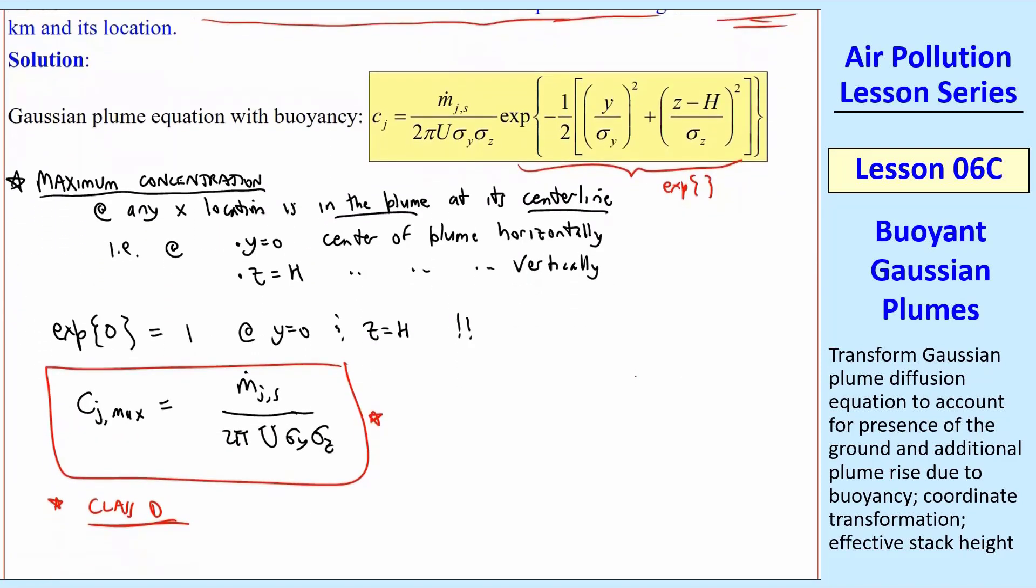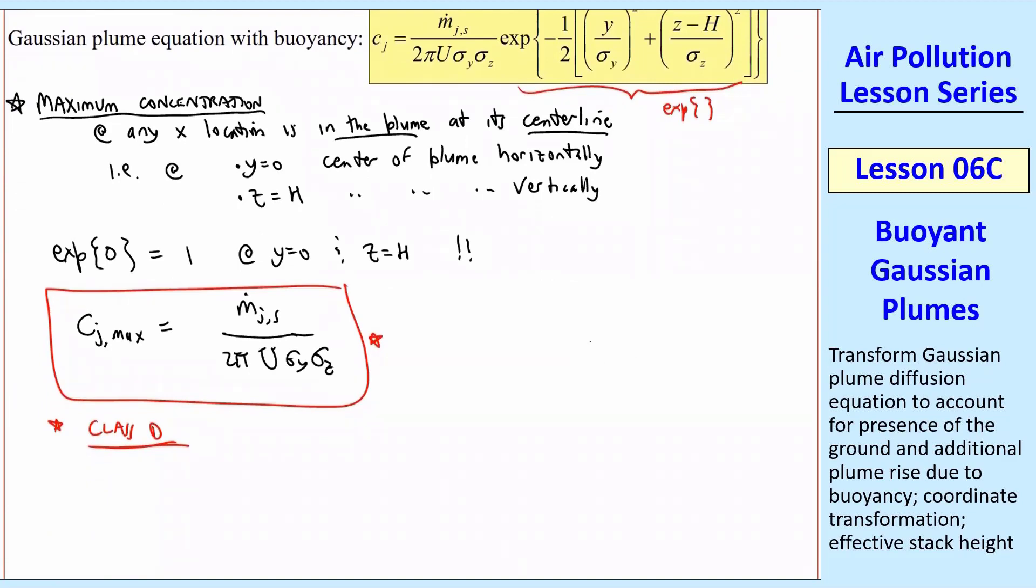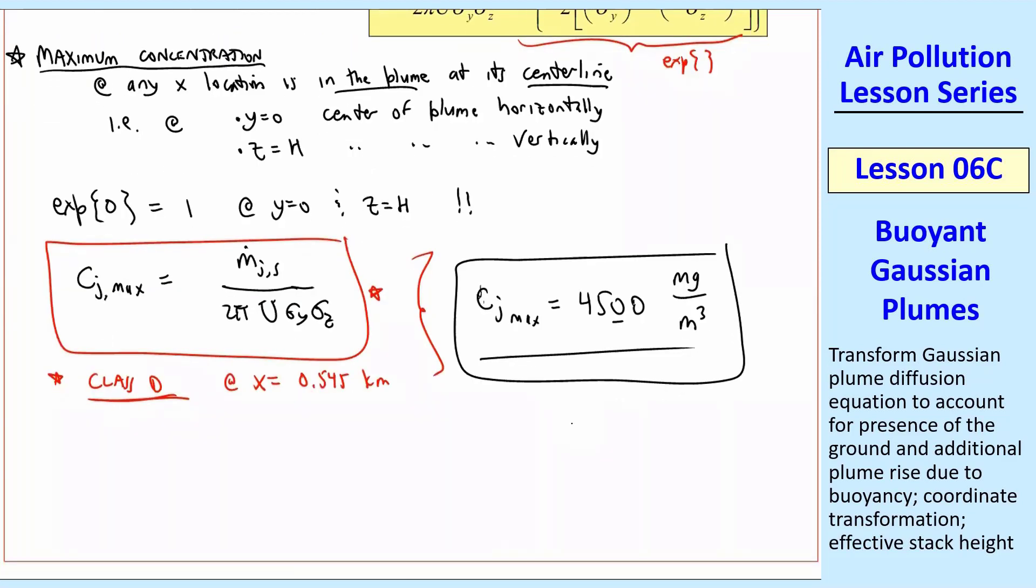Figure out what coefficients A, B, C, D, F to use for your sigmas. And then you'd have to calculate sigma Y and sigma Z. So this is all review class D at X equals 0.545 kilometers, plug everything in, and you should get your final answer. Make sure you are able to get this answer. And I'm going to give it to three significant digits. So C, J, max turns out to be 4,500, three significant digits here, milligram per meter cube. So watch your units and all your calculations. And so that should be your final answer. So do this on your own before you try the quiz to make sure you can get this.